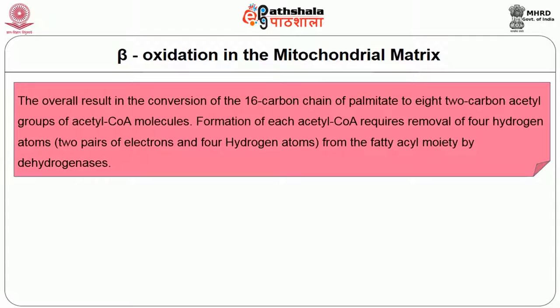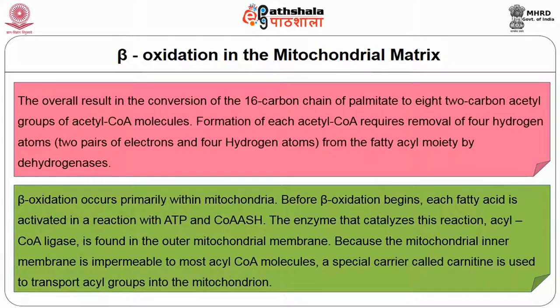The overall result is the conversion of the 16-carbon chain of palmitate to 8 two-carbon acetyl groups of acetyl-CoA molecules. Formation of each acetyl-CoA requires the removal of 4 hydrogen atoms from the fatty acyl moiety by dehydrogenases. Beta oxidation occurs primarily within mitochondria. Before beta oxidation begins, each fatty acid is activated in a reaction with ATP and CoA-SH. The enzyme that catalyzes this reaction, acyl-CoA ligase, is found in the outer mitochondrial membrane, because the mitochondrial inner membrane is impermeable to most acyl-CoA molecules.